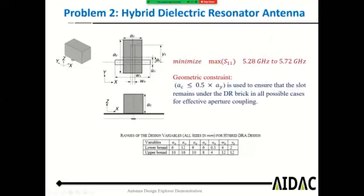The second problem is also an antenna modeled in CST. The optimization goal is minimization of the maximum return loss in the wireless LAN band. It includes a geometric constraint to ensure the slot is always under the DHR brick during optimization — in other words, as the candidate designs vary, we want to ensure the DHR brick is always aperture coupled to the slot.